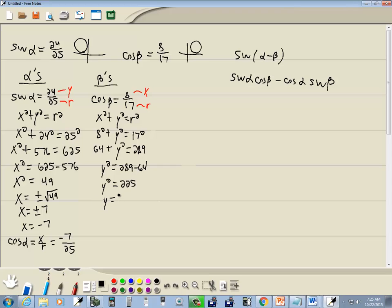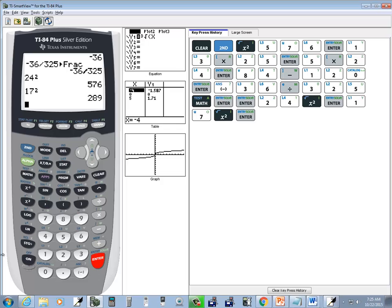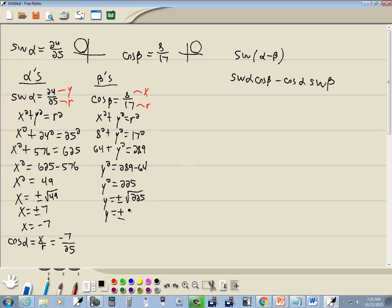Drop the squared. Put a plus or minus square root on the other side. I think that's 15, but let me see. 15 squared. Yeah, it does give us 225. So we've got y is equal to plus or minus 15. And beta is in quadrant 1, which means everything's positive. So we've got y is equal to positive 15.